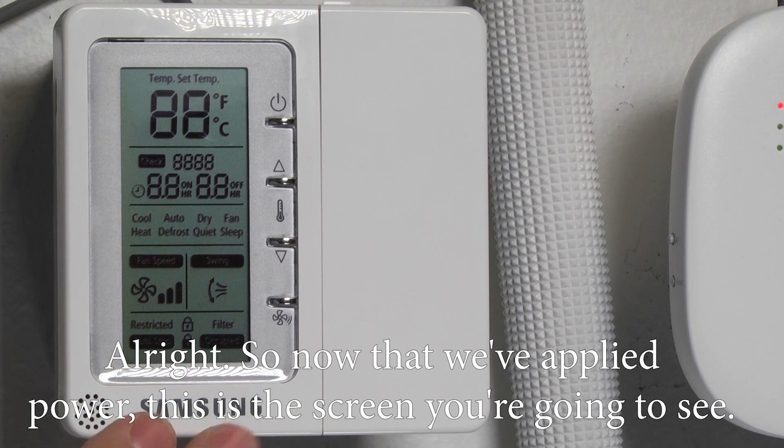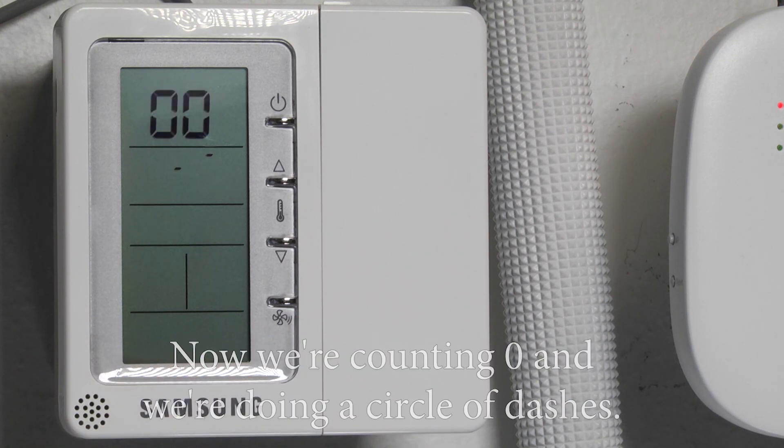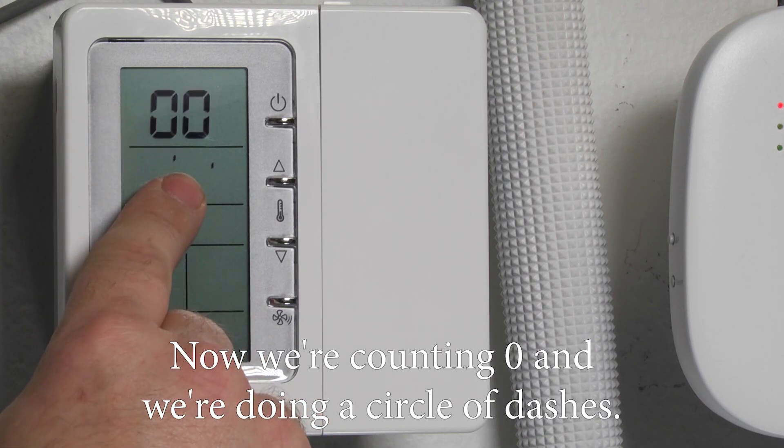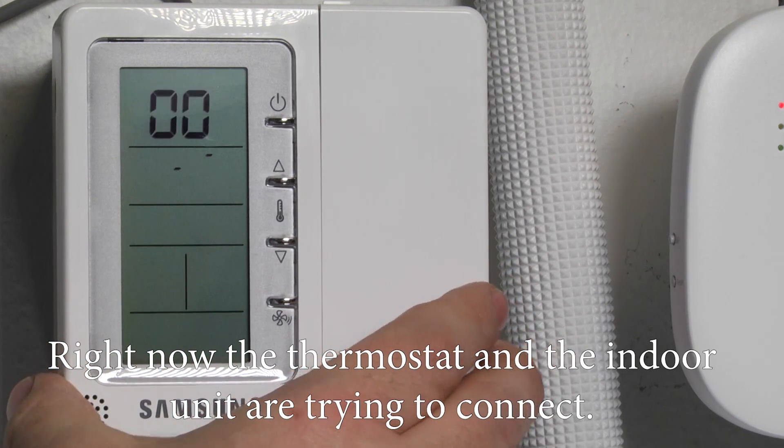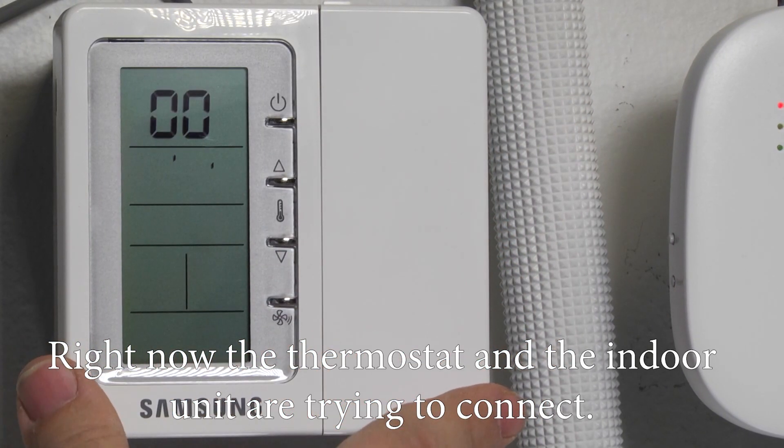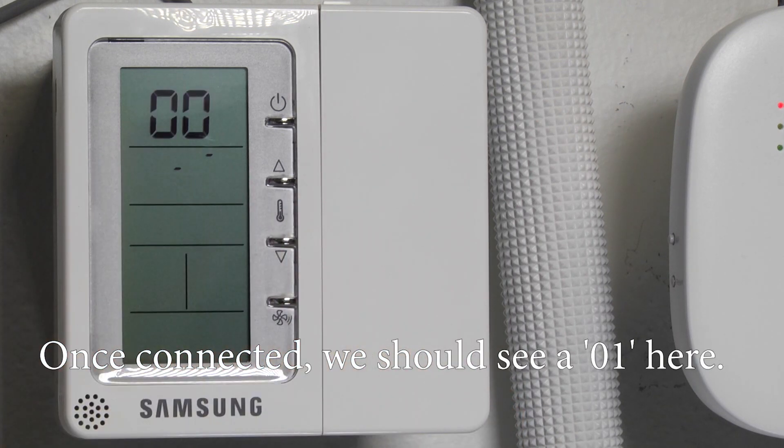Alright. So now that we applied power this is the screen you're going to see. All the display will light up. Now we're counting 0 and we're doing a circle of dashes. Right now the thermostat and the indoor unit are trying to connect.